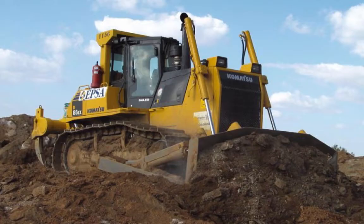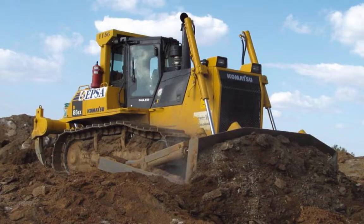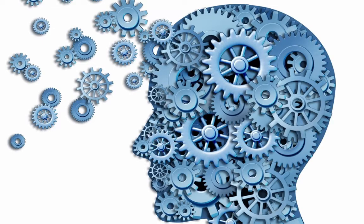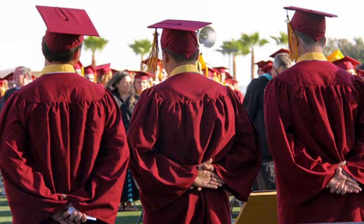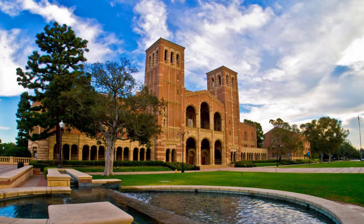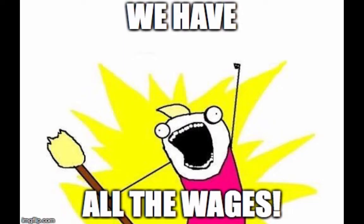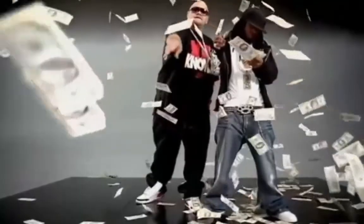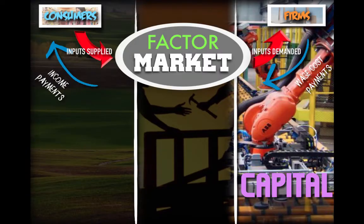The third resource is capital, and there are three different types. Physical capital consists of final goods produced for use in the production of other goods, such as equipment or tools. Human capital refers to the skills and knowledge used by workers to produce goods — you go to school to gain human capital and acquire greater human capital in college to become a more valuable worker and increase your wages. Financial capital is money or assets used to purchase inputs.